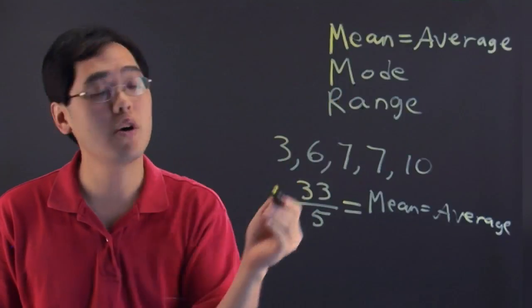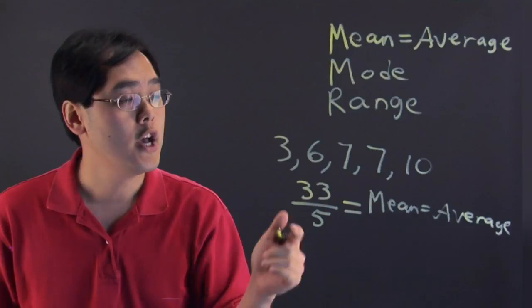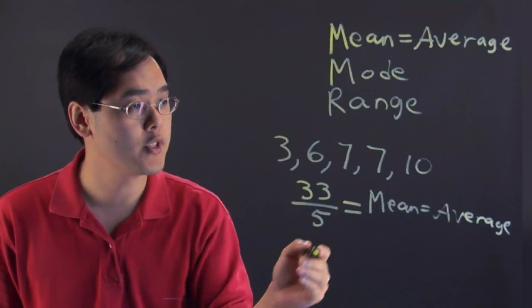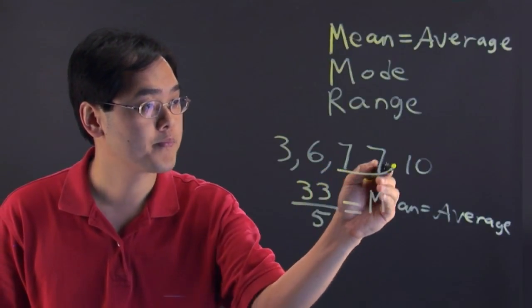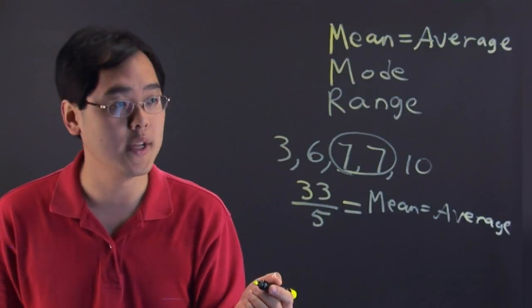In terms of mode, the mode is the number that shows up the most times. As you can tell from this list of five numbers, the number 7 shows up twice. All the other numbers show up only once.